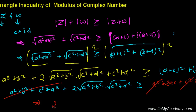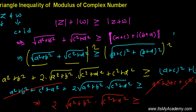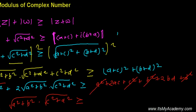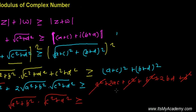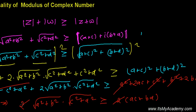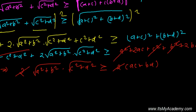After cancellation, we get: 2√(a² + b²)·√(c² + d²) is greater than or equal to 2ac + 2bd. Taking 2 as a common factor gives 2(ac + bd). The two on both sides cancels.